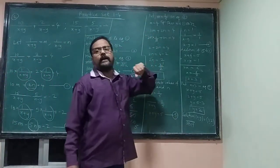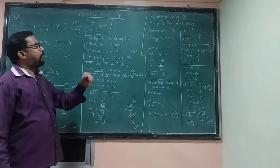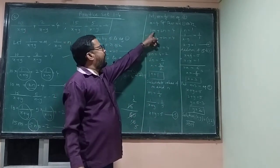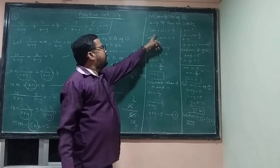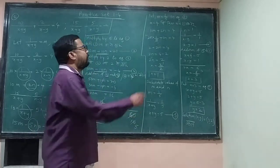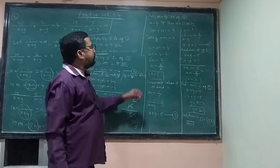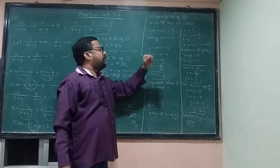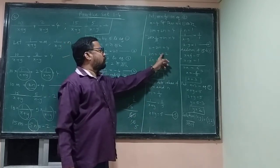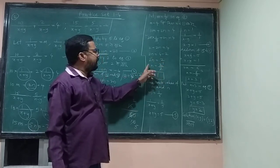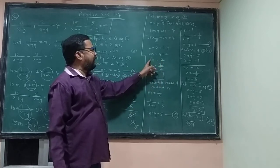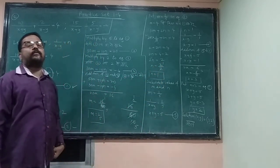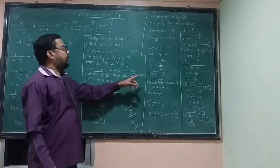Now put this value of m into equation 1: 10m plus 2n is equal to 4. Substituting m = 1/5: 10 into 1/5 plus 2n equals 4, which gives 2 plus 2n equals 4. Taking 2 to the other side: 2n equals 4 minus 2, so 2n equals 2, and n equals 1. So value of m is 1/5 and value of n is 1.